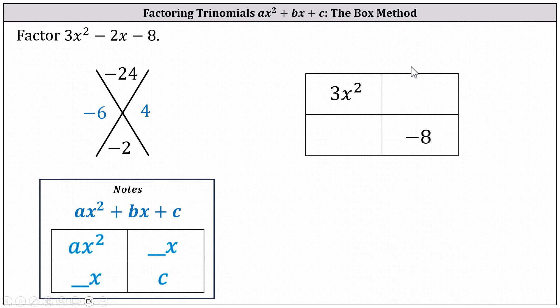For the remaining two boxes, for the negative 2x, we use negative 6x and positive 4x. It doesn't matter where we place the 4x and negative 6x along this diagonal — the result will be the same.